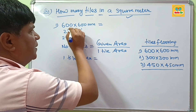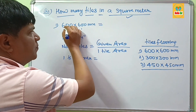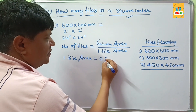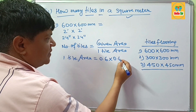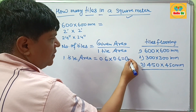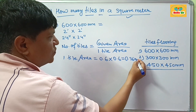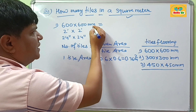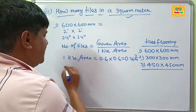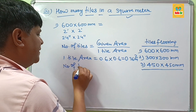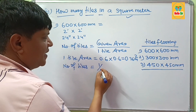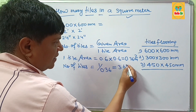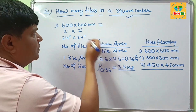One tile area is calculated by multiplying both dimensions in meters. Converting 600 mm to meters gives 0.6 m, so one tile area is 0.6 x 0.6 = 0.36 square meters. Number of tiles equals 1 divided by 0.36, which gives approximately 3 tiles. So there are about 3 tiles of 600 x 600 mm in one square meter.